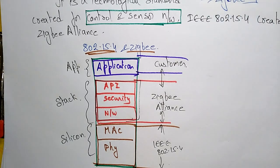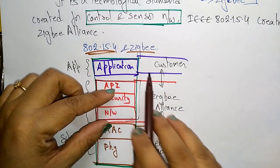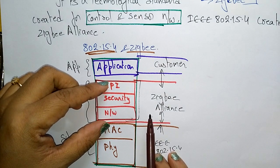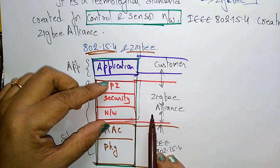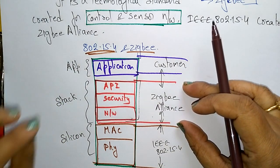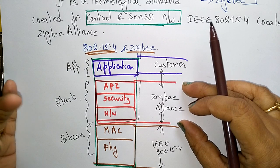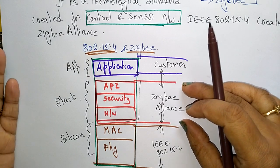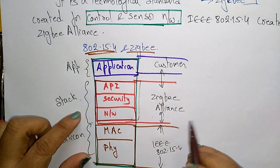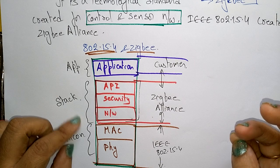This part is for Zigbee Alliances and this part is for the customer, and this is for IEEE 802.15.4. Zigbee Alliances is an association of companies — different companies working together like HP, Motorola, Intel, and Philips — all working together to enable cost-effective, low-power solutions.